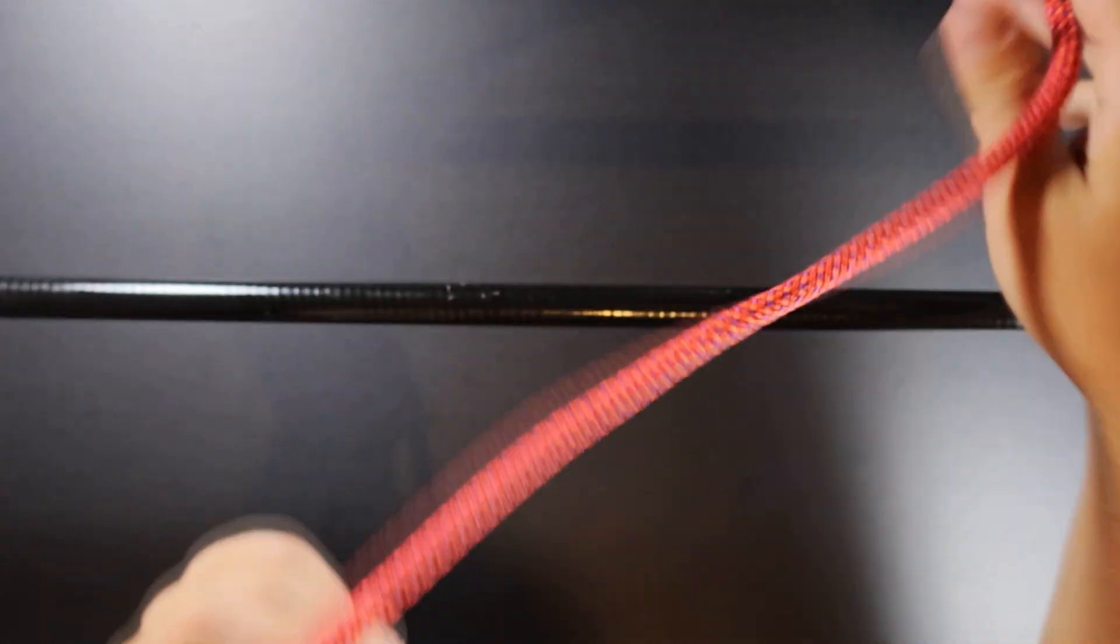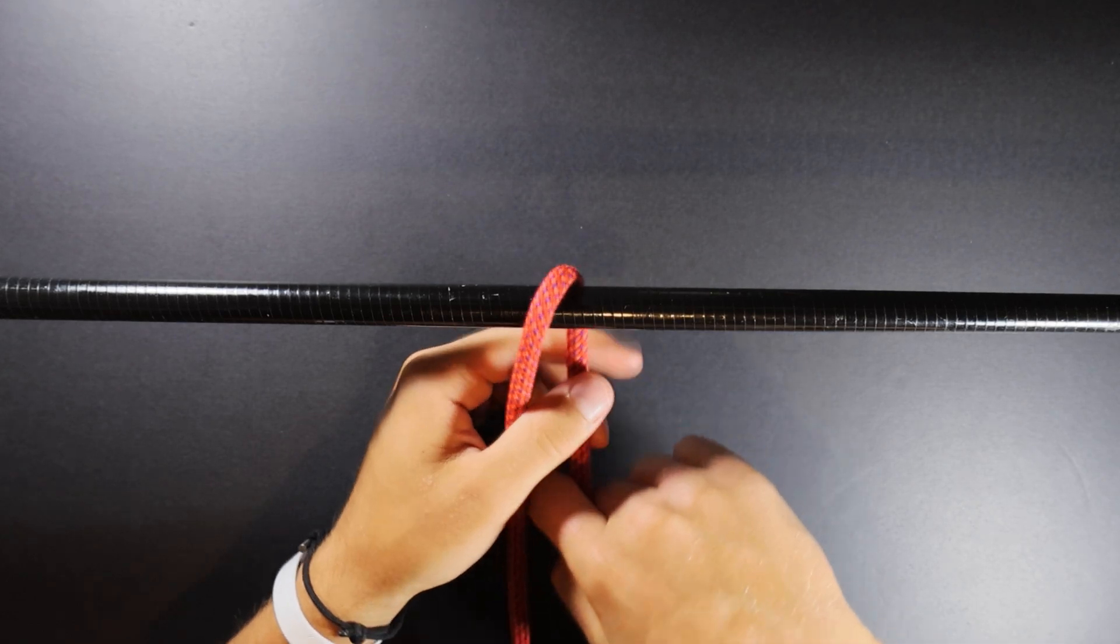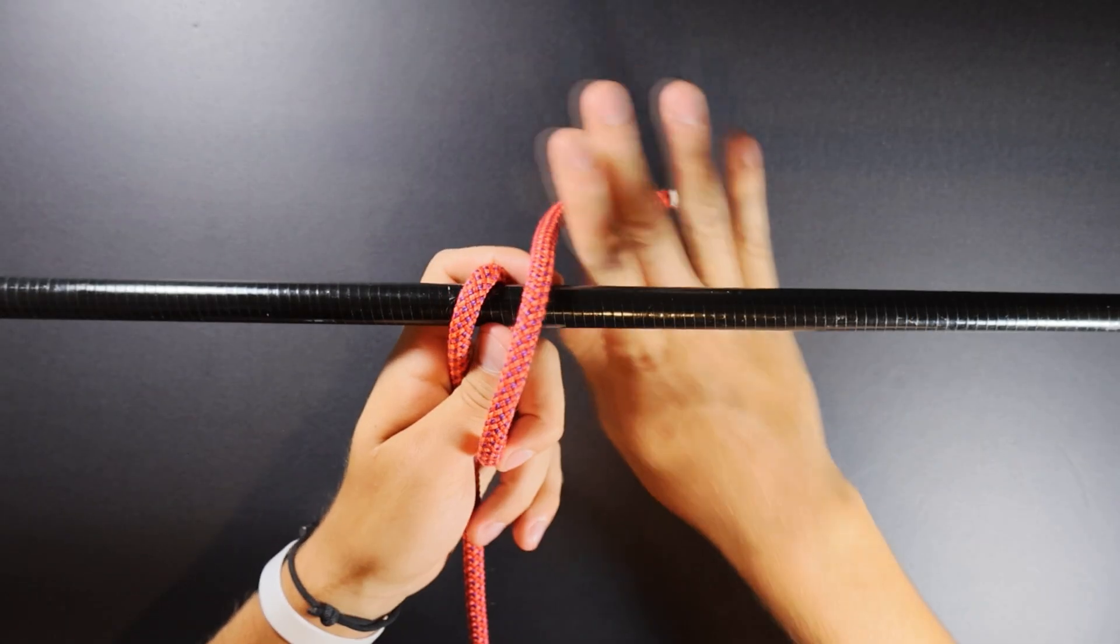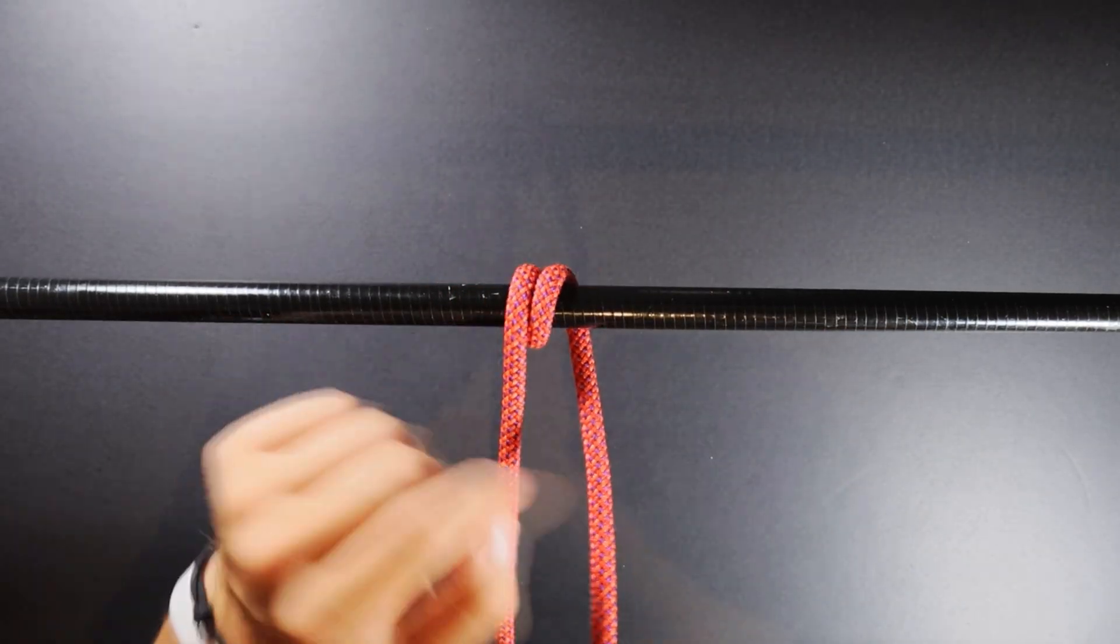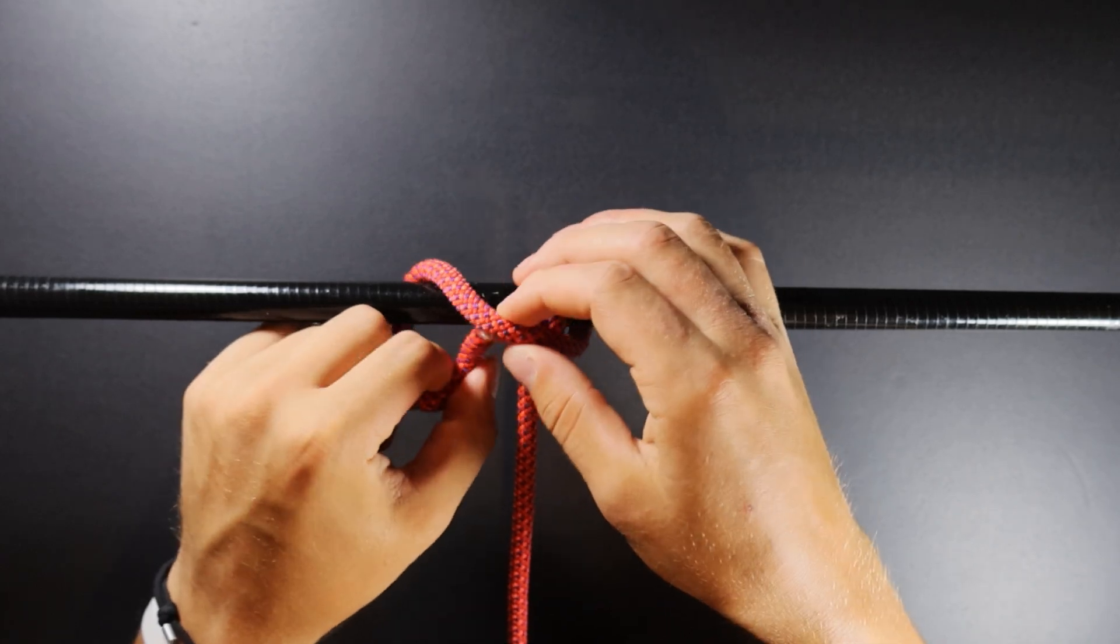So let's show you how to tie it first. We're going to go around our object we're tying to, it could be whatever, we're going to make a second loop, we're going to cross over here, go around and then come underneath here, just like that.